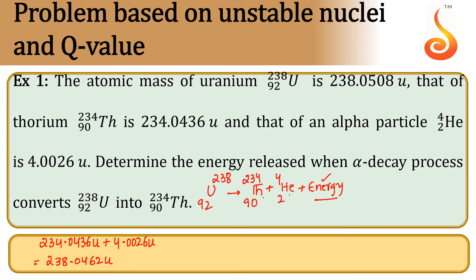The mass of uranium is 238.0508 atomic mass units. Therefore, the mass defect — the mass that disappeared — is 238.0508 minus 238.0462, which equals 0.0046 atomic mass units.